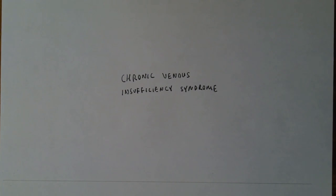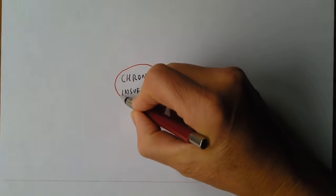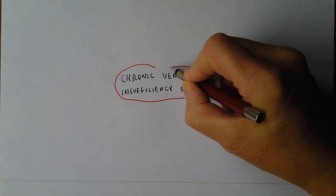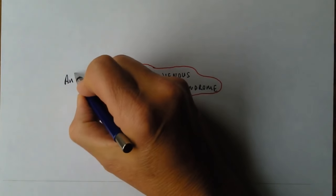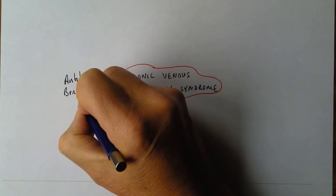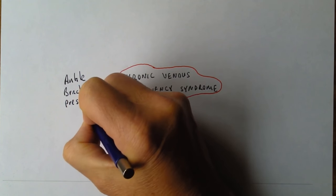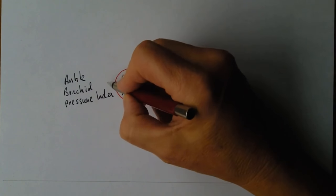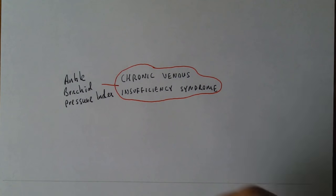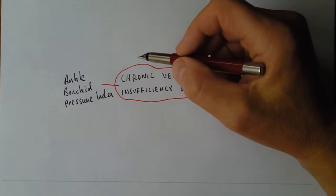Chronic venous insufficiency syndrome is relatively common, especially in westernised countries, associated with venous hypertension. Now the first thing to discuss is the ankle-brachial pressure index — ABPI — which is the ratio between the blood pressure in the brachial artery and in the posterior tibial artery at the ankle. If someone has peripheral arterial vascular disease, the blood pressure in the brachial artery is going to be higher than in the ankle, pointing to peripheral arterial insufficiency. In chronic venous insufficiency syndrome the ankle-brachial pressure index is going to be normal.